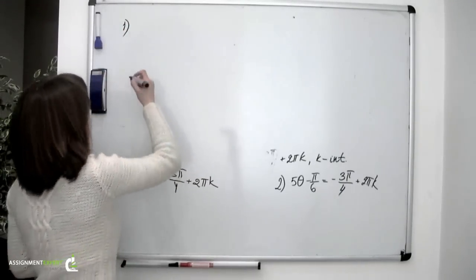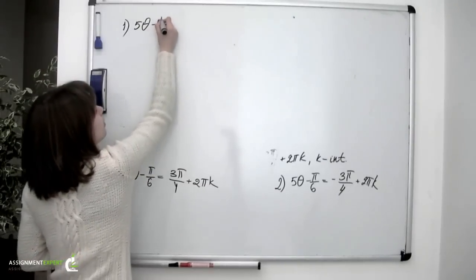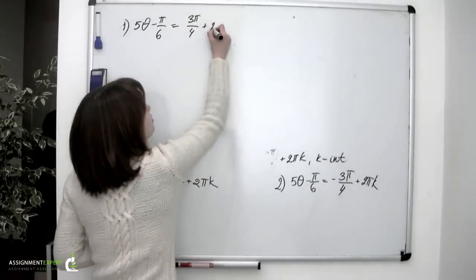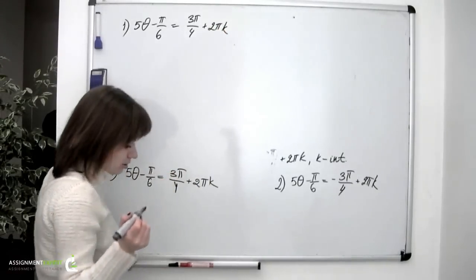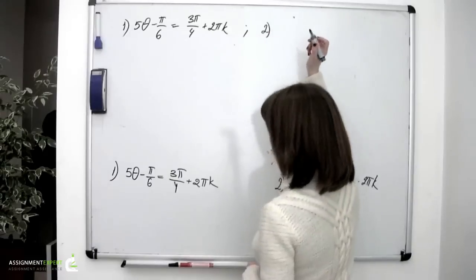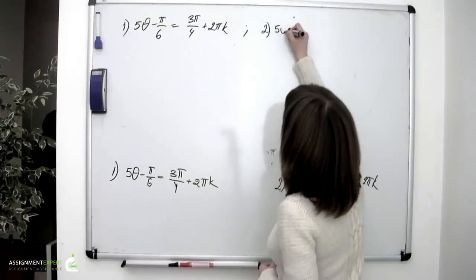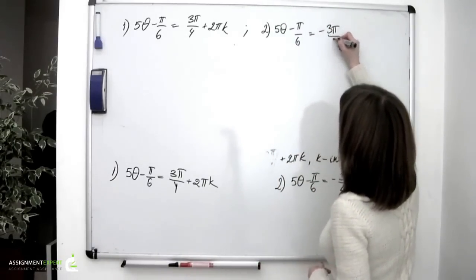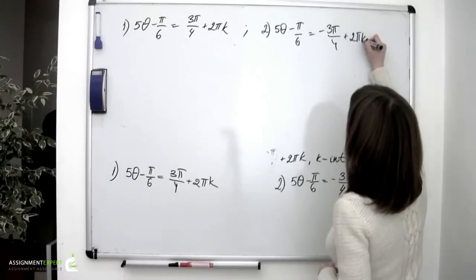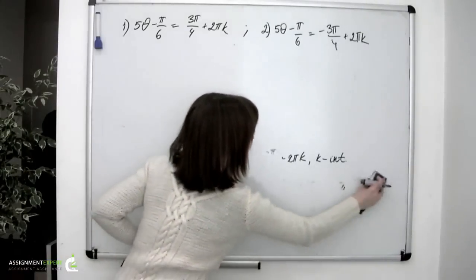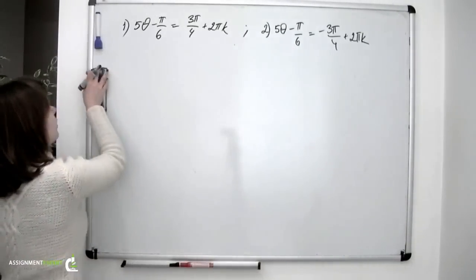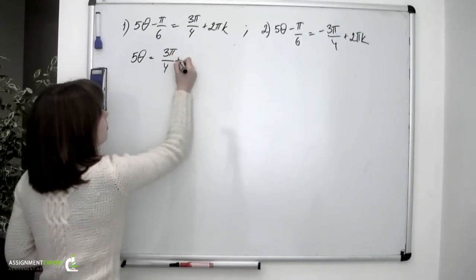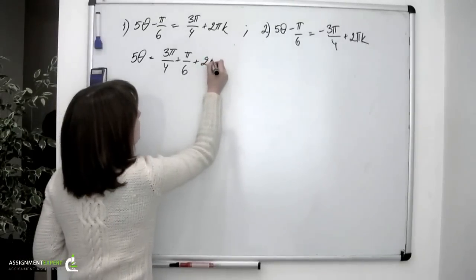Let's rewrite them here. The first equation: 5 theta minus pi over 6 equals 3 pi over 4 plus 2 pi k. The second equation: 5 theta minus pi over 6 equals negative 3 pi over 4 plus 2 pi k. From the first equation: 5 theta equals 3 pi over 4 plus pi over 6 plus 2 pi k.